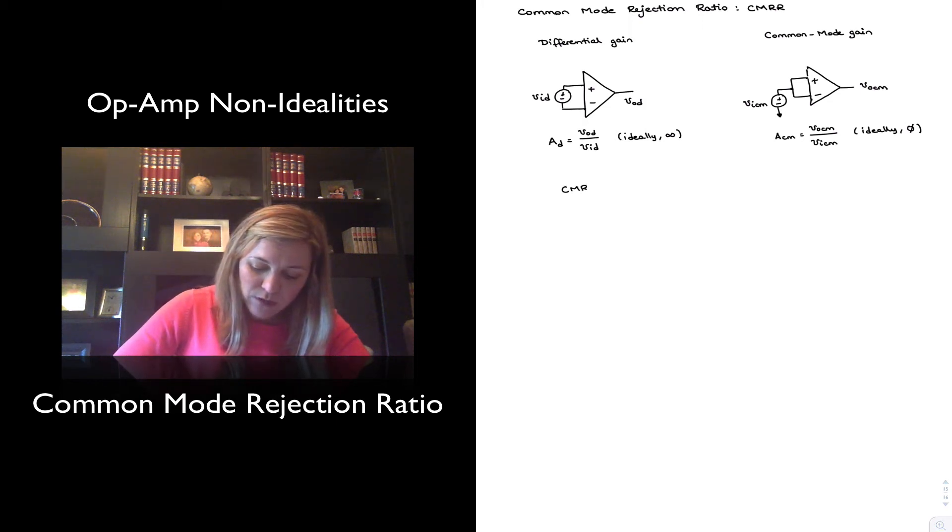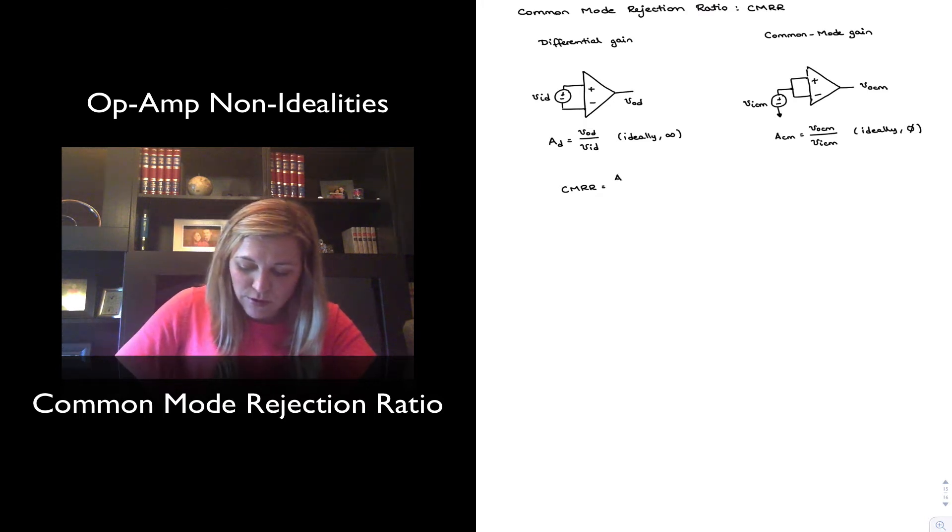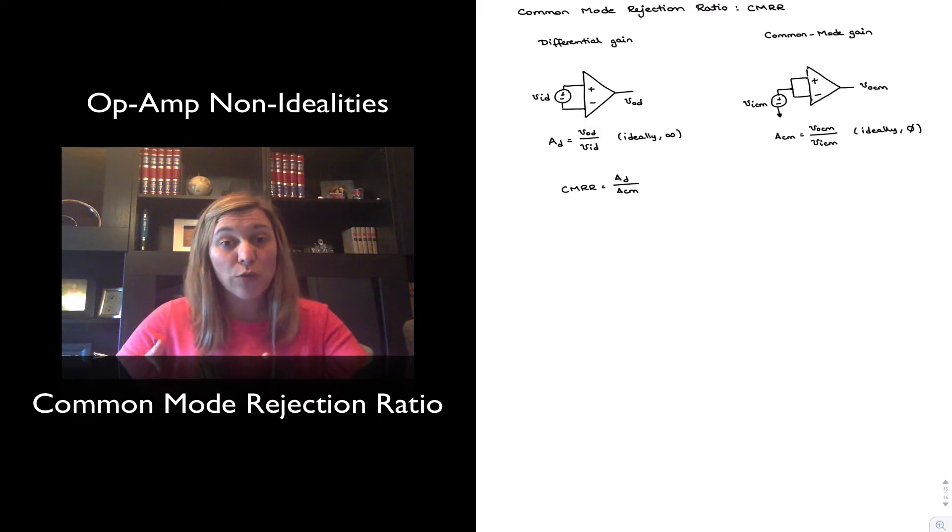The Common Mode Rejection Ratio or CEMRR represents how well the amplifier disregards or attenuates Common Mode signals. And it's in fact a ratio of the differential gain to the Common Mode gain. So basically, it tells you how much more the amplifier amplifies the differential portion of the signal than the Common Mode portion of the signal.